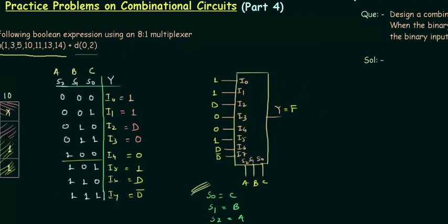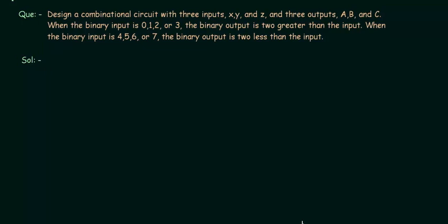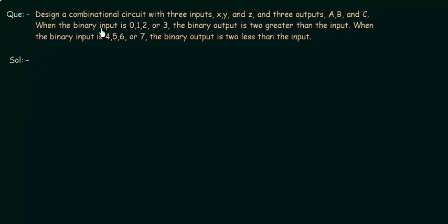Now let's move to the problem number 2 that you have to solve. Let's first read what it says. Design a combinational circuit with 3 inputs. There are 3 inputs. So X, Y, Z are my 3 inputs. And 3 outputs are also there. A, B, C are the 3 outputs.